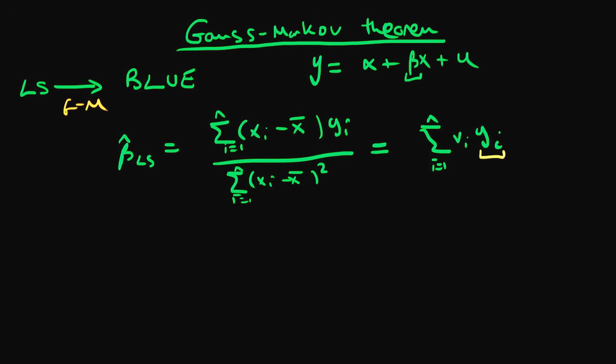And if we write out what vi is explicitly, vi is equal to xi minus x bar all divided by this sort of thing which I'm going to call SSX which represents this thing on the bottom.